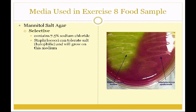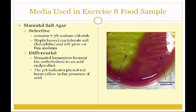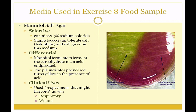Mannitol salt agar is a selective medium containing sodium chloride. Staphylococci are called halophilic — they tolerate salt and are able to grow in this medium, allowing us to grow and differentiate staphylococci. There is mannitol in this medium, which is a sugar. Staphylococcus aureus can ferment mannitol; Staphylococcus epidermidis cannot. S. aureus ferments mannitol to an acid end product, and the pH indicator phenol red turns yellow in the presence of acid, giving S. aureus a yellow colony. S. epidermidis gives a colorless or white colony. Clinical uses include any specimen suspected to harbor Staphylococcus aureus, such as respiratory or wound cultures.